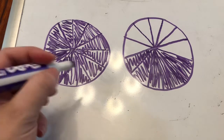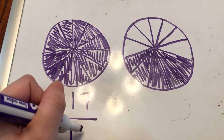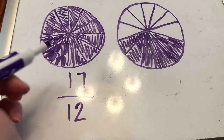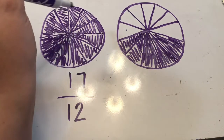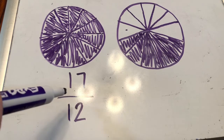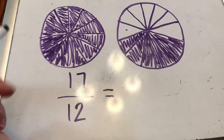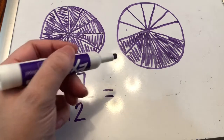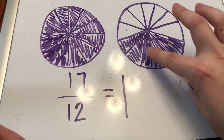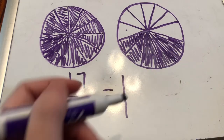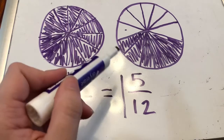Here I have seventeen twelfths colored in. My circles are divided into twelfths: one, two, three, four, five, six, seven, eight, nine, ten, eleven, twelve. This wants me to convert it from an improper fraction to a mixed number. All I have to do is see how many wholes there are — in this case there's one whole, so I will put a big one. Then I count how many other twelfths are filled in: one, two, three, four, five. Five twelfths. So this is one whole and five twelfths.